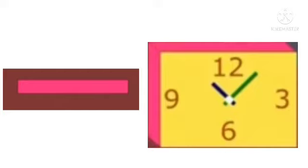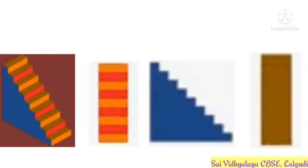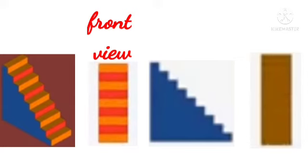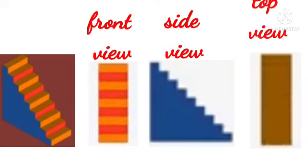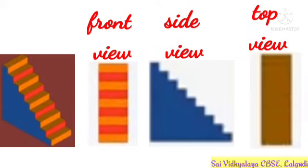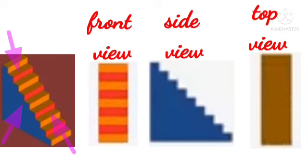Let me explain with another example. Children, look at this staircase. This is a front view. This is a side view. And this is a top view of the staircase. Here is the picture of the staircase. If we look at the object from different sides, the shapes appear different.